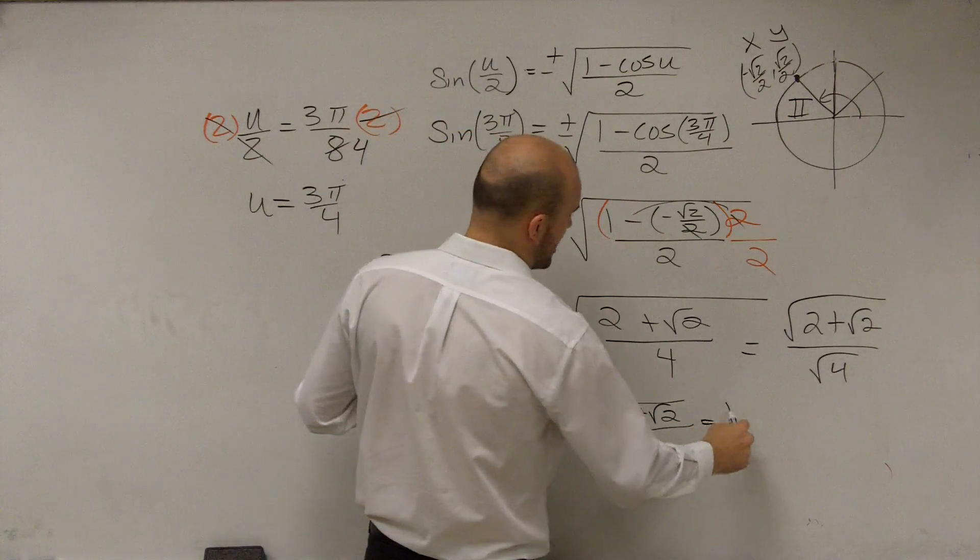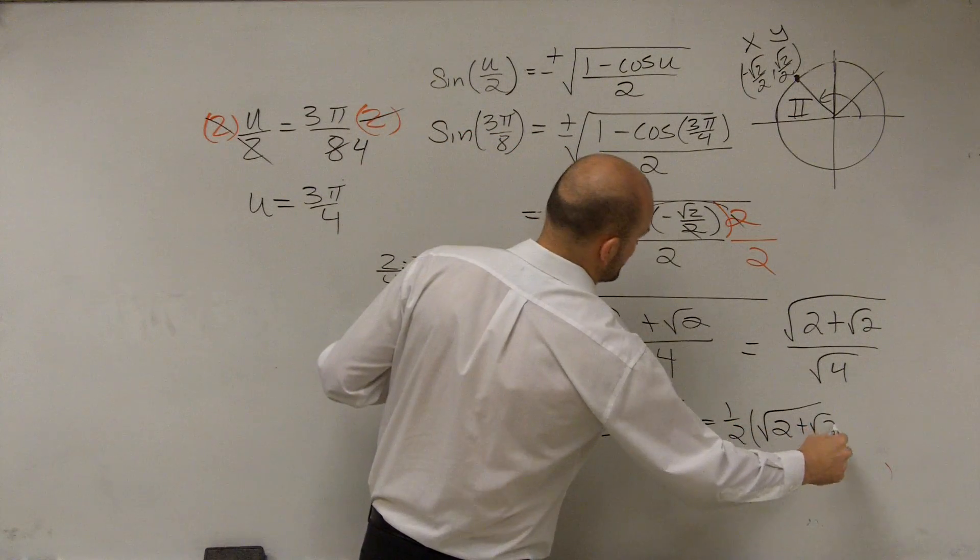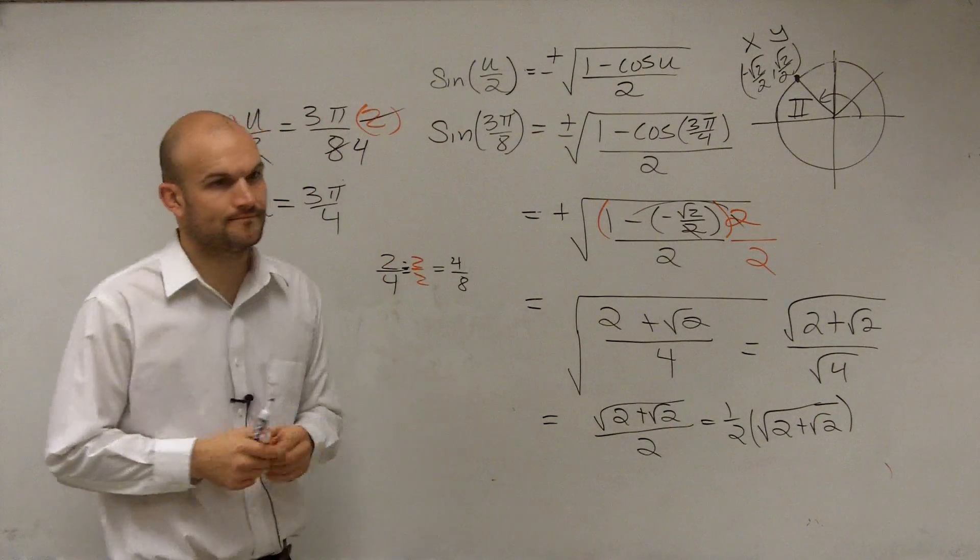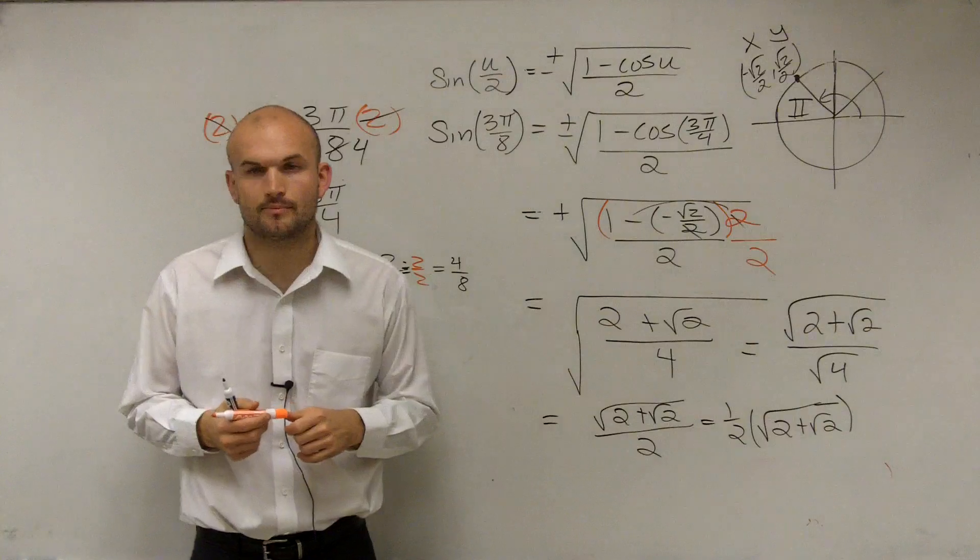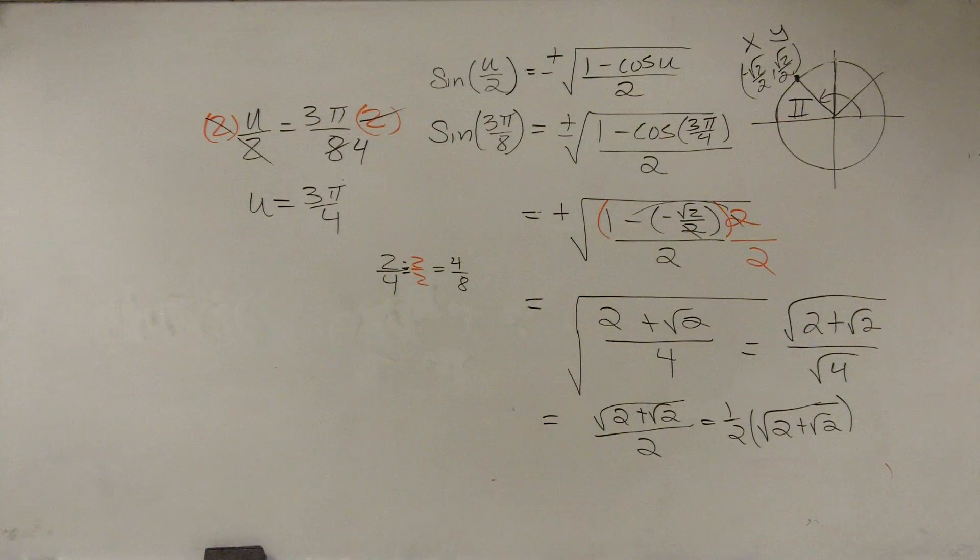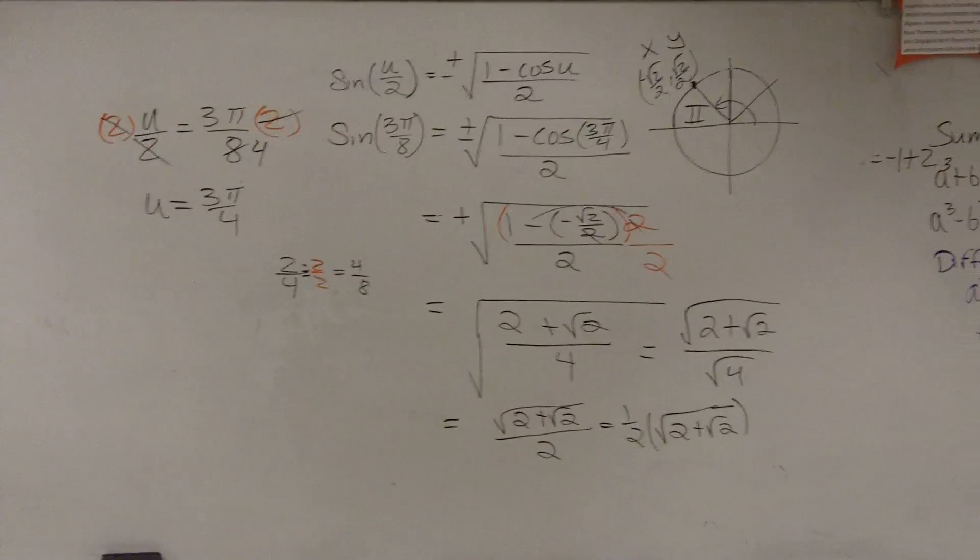And you could also break that up into 1 half times the square root of 2 plus square root of 2. Okay? So that's how you worked your problem. That is going to be your final reduced problem.